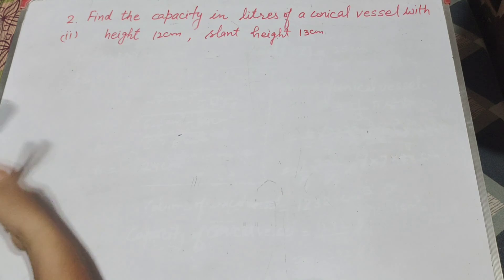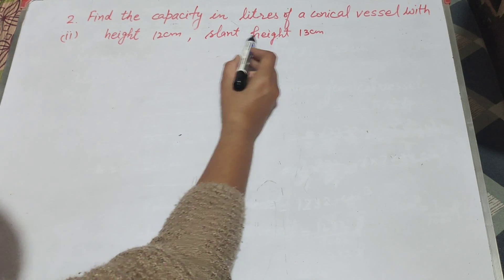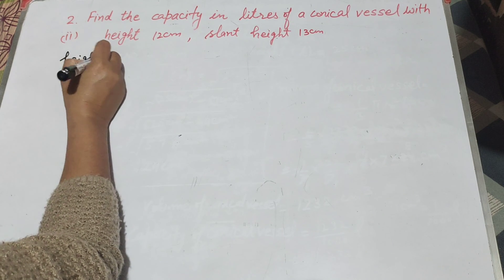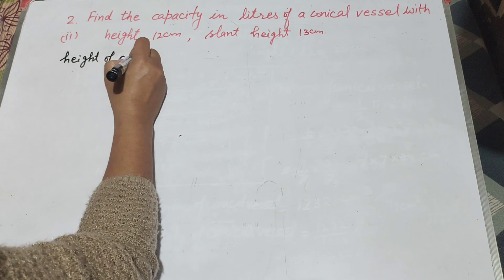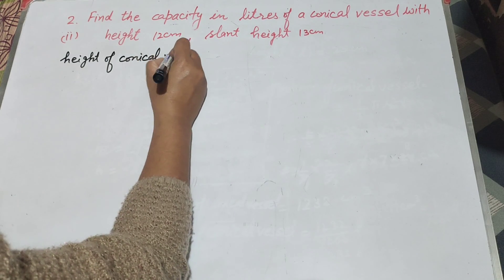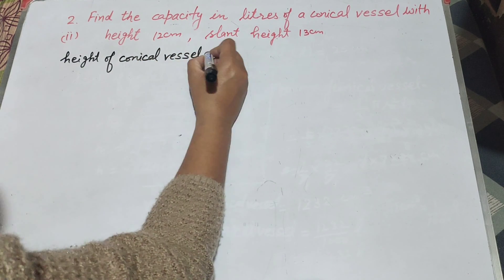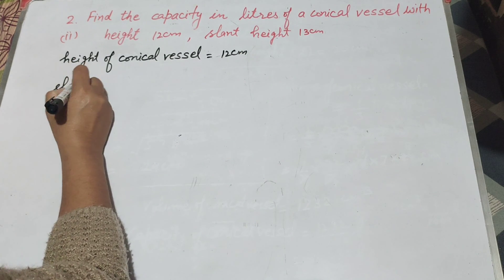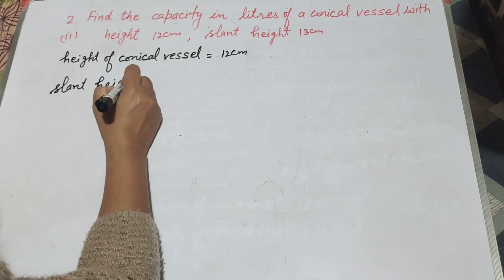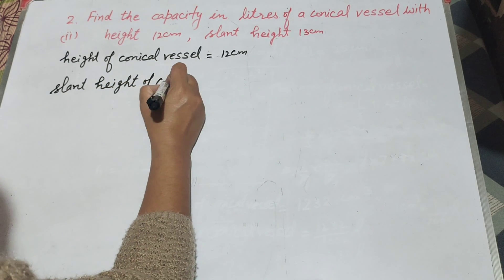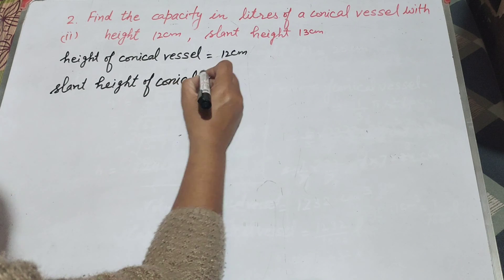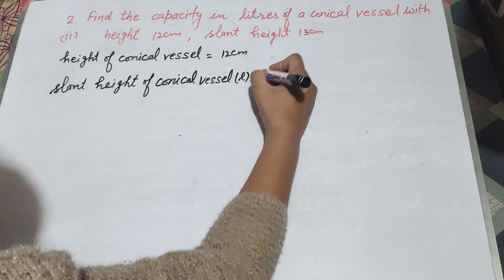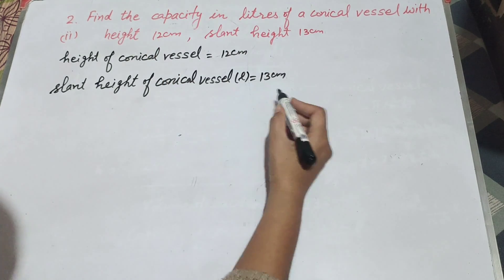Now we move to the second part. In the second part, given is height is 12 centimeter and slant height is 13 centimeter. Height of conical vessel is equal to 12 centimeter and slant height of conical vessel is equal to 13 centimeter. To find capacity we need to find volume of the conical vessel.